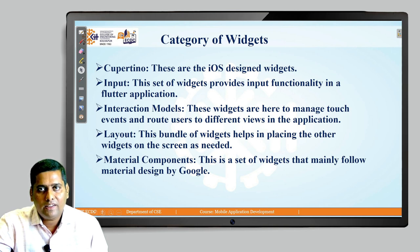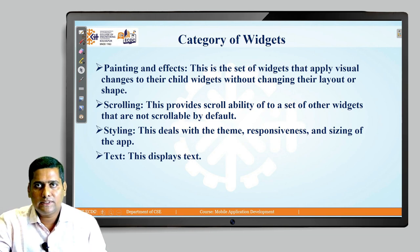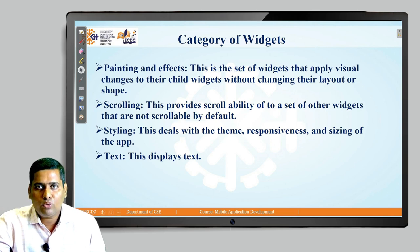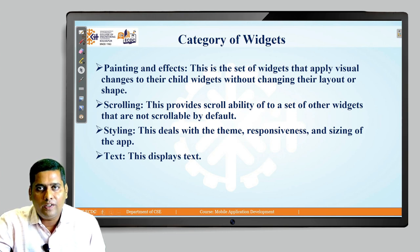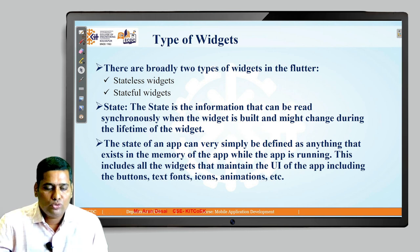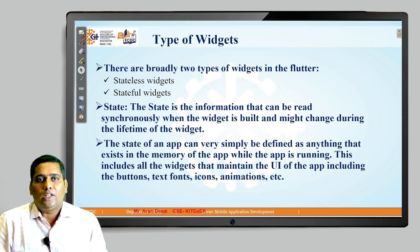We have material components as a category, which implements the material design given by Google. Another category is painting and effects — a set of widgets that apply visual changes to child widgets without changing their layout or shape. The scrolling category provides scroll ability to widgets. We also have styling to deal with themes, responsiveness, and sizing. Finally, there is a text widget category to display text. That is how we broadly categorize the 14 categories of widgets.